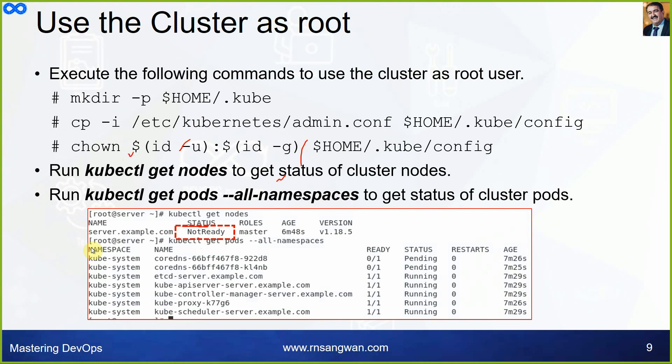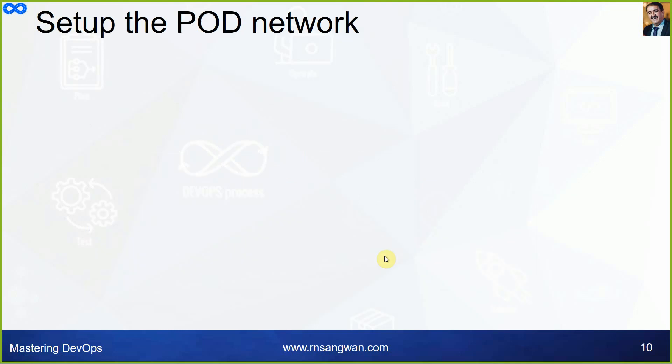The 'NotReady' status is caused by the CoreDNS pods showing as Pending. CoreDNS is pending because there is no container networking plugin available, so there is no way for CoreDNS to work. We need to apply a CNI (Container Networking Interface) plugin for Kubernetes — only then will CoreDNS start running and the node status become Ready.